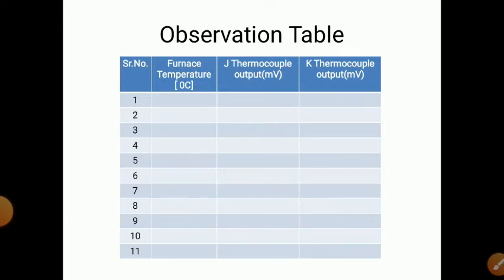Now for the observation tables: the first column is furnace temperature in degrees Celsius. The second column is J thermocouple and K thermocouple output measured in millivolts. As temperature increases, voltage also increases. We take readings at 10 degree Celsius intervals — 10, 20, 30, 40, 50, 60, up to 100 degrees Celsius — and note all readings for J and K thermocouple in millivolts.